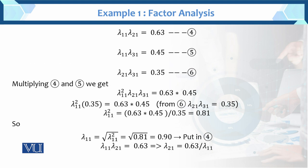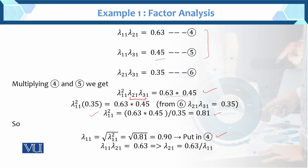To find the lambda and psi values, multiply equation 4 and equation 5. We get lambda_11 squared times lambda_21*lambda_31. Substituting the value of lambda_21*lambda_31 from equation 6, which is 0.35, into 0.63 multiplied by 0.45, then dividing by 0.35 gives lambda_11 squared equals 0.81.